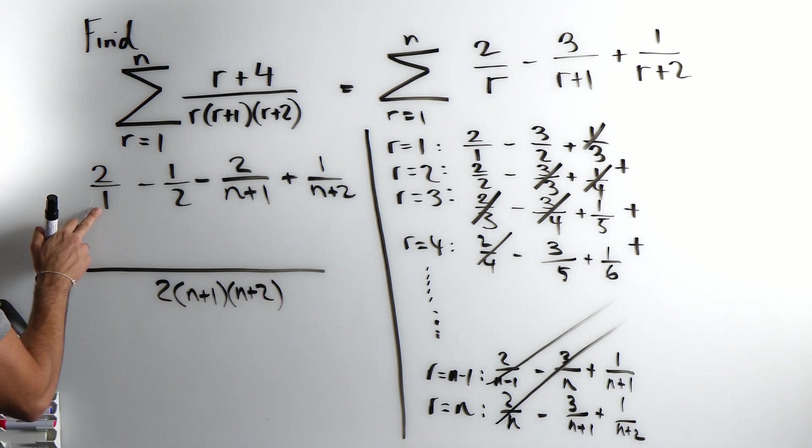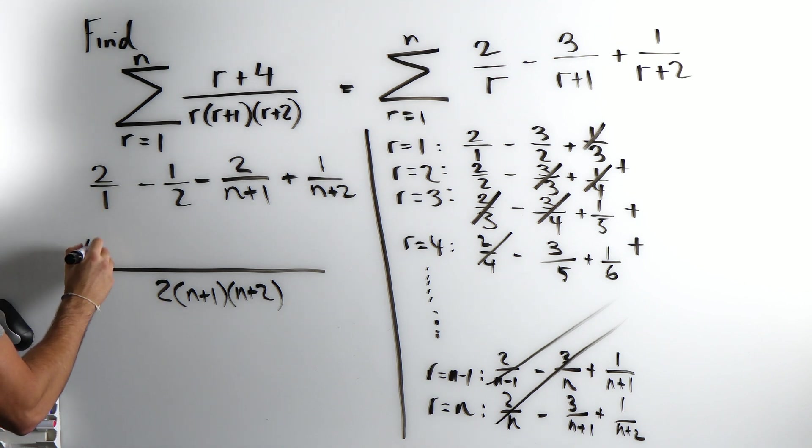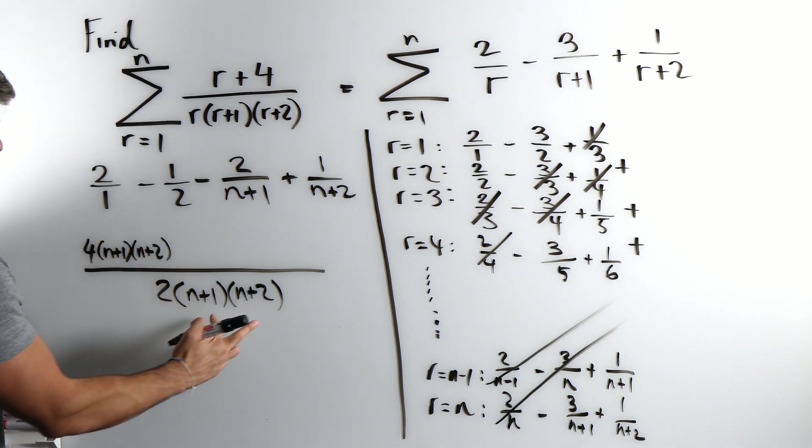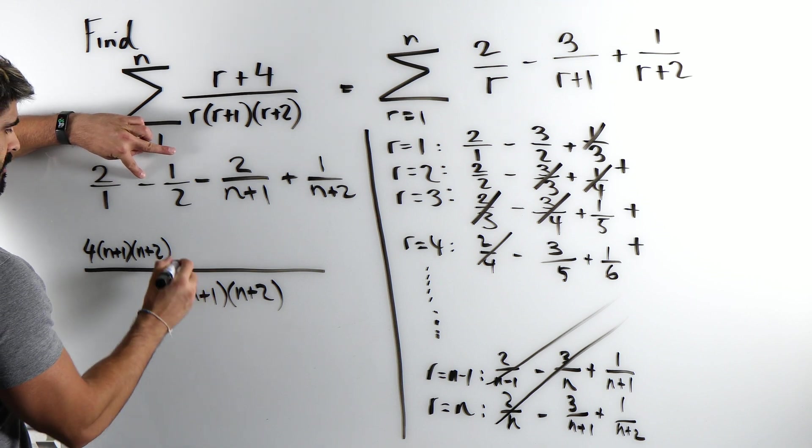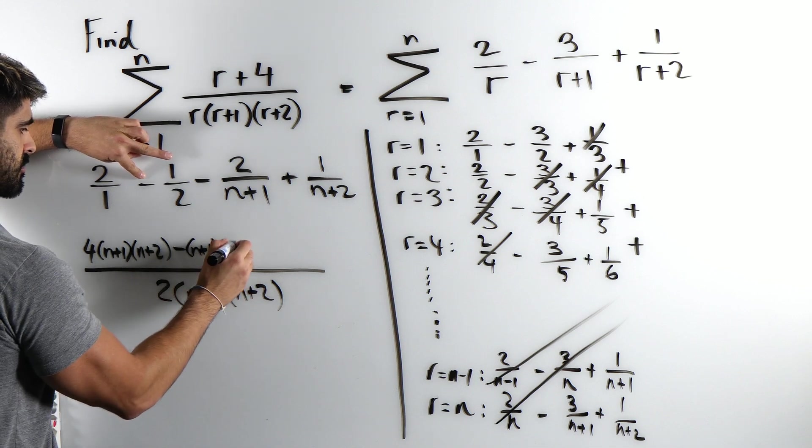For this it's just 1, so we're going to times top and bottom by all of this. 2 times 2 is 4, n plus 1, n plus 2. This already has the 2, so we're going to multiply by all this, going to be minus n plus 1 and n plus 2.